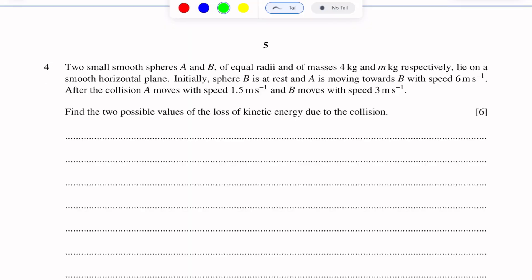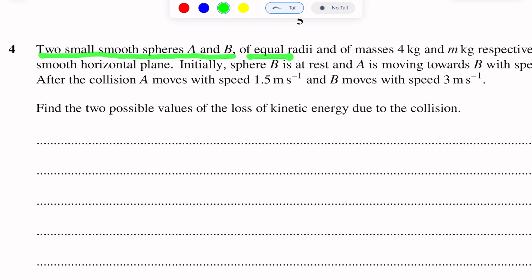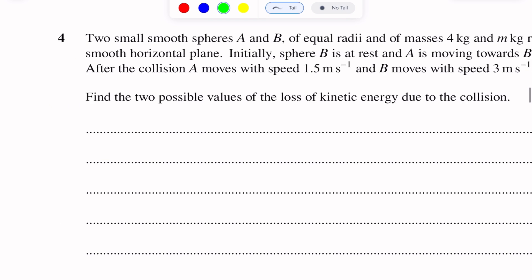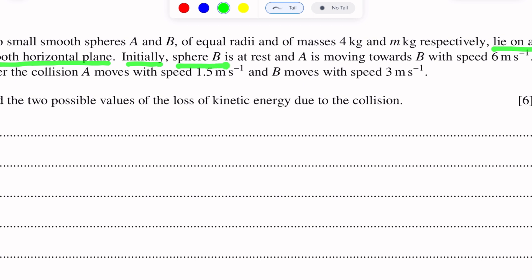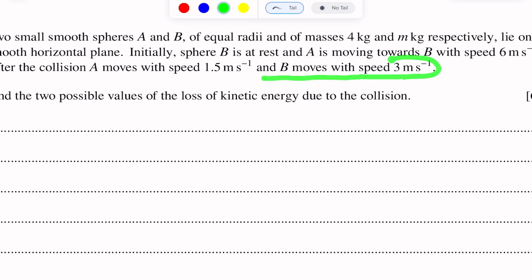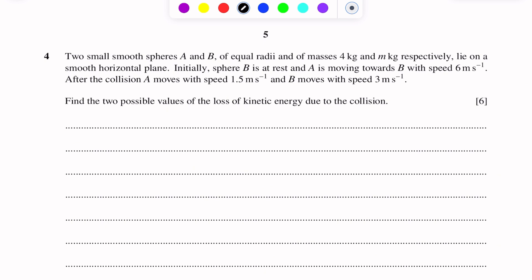Question number four. This question is from momentum — the law of conservation of momentum will be used here. Two small smooth spheres A and B of equal radii and masses 4 kg and m kg respectively lie on a smooth horizontal plane. Initially sphere B is at rest and A is moving towards B with speed 6 m/s. After the collision, A moves with speed 1.5 m/s and B moves with speed 3 m/s. Find the two possible values of the loss of kinetic energy due to the collision.